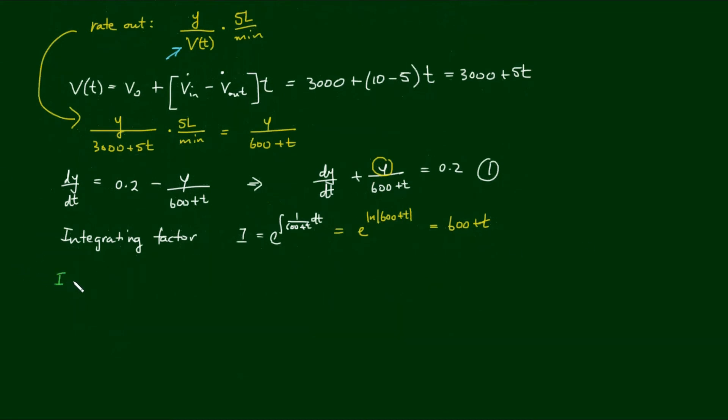So what we can do now is to multiply through by the integrating factor. So if we multiply I by equation 1, this implies we have 600 plus t by dy/dt plus y equals 0.2 by 600 plus t. And when we use integrating factors, the left hand side reduces to 600 plus t by y. So when we apply the product rule to 600 plus t by y, we should get back to the left hand side that we started with. So that's the ingenuity of integrating factors. And let's simplify the right hand side, which is now 120 plus 0.2t.